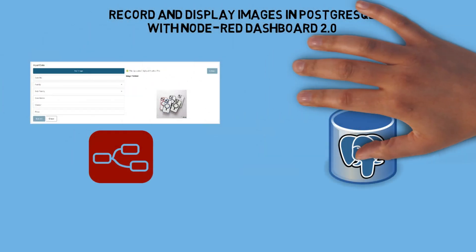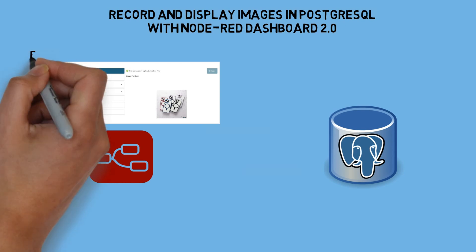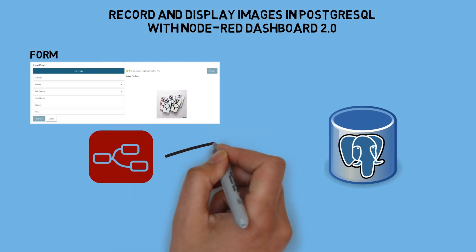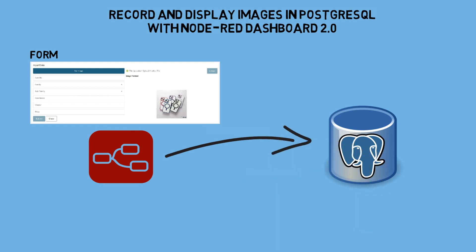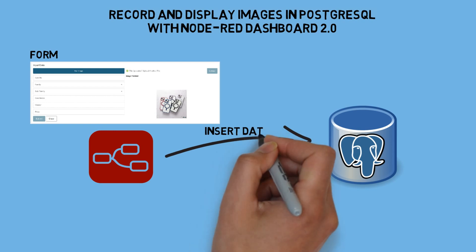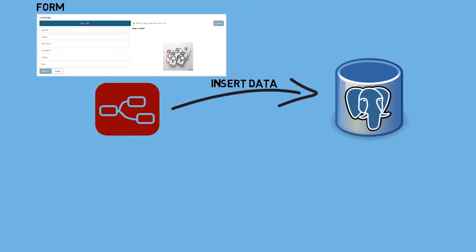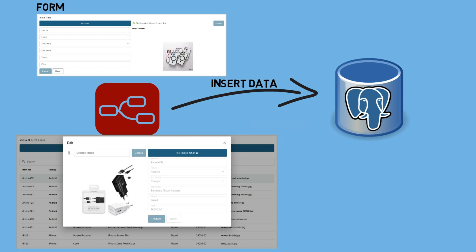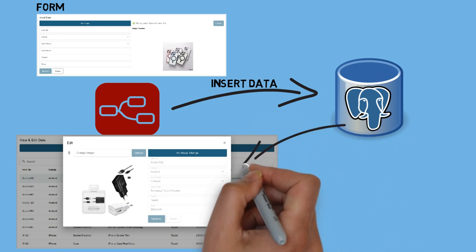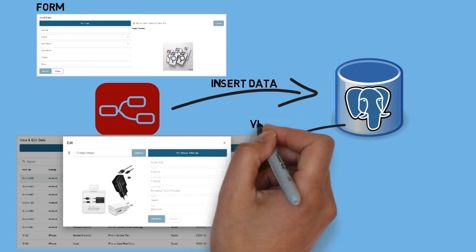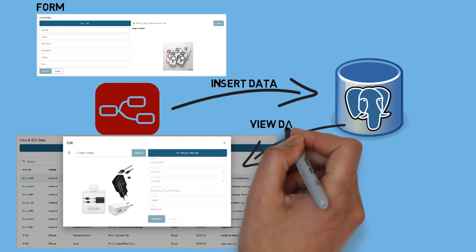In Node-RED Dashboard 2.0, I created a form to insert data into the database, including an image input using UI File input. Besides inserting data, I will also retrieve data from the database in Dashboard 2.0, display it in a table, and show the image in a dialog group when a table entry is clicked.